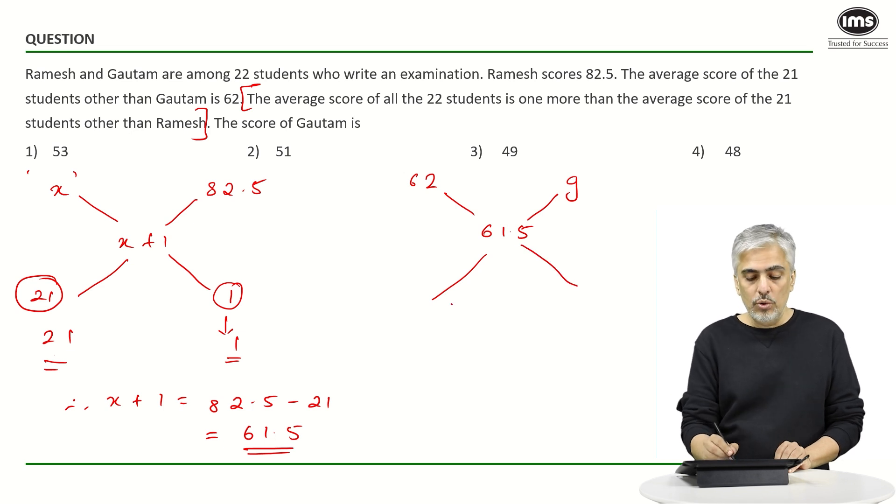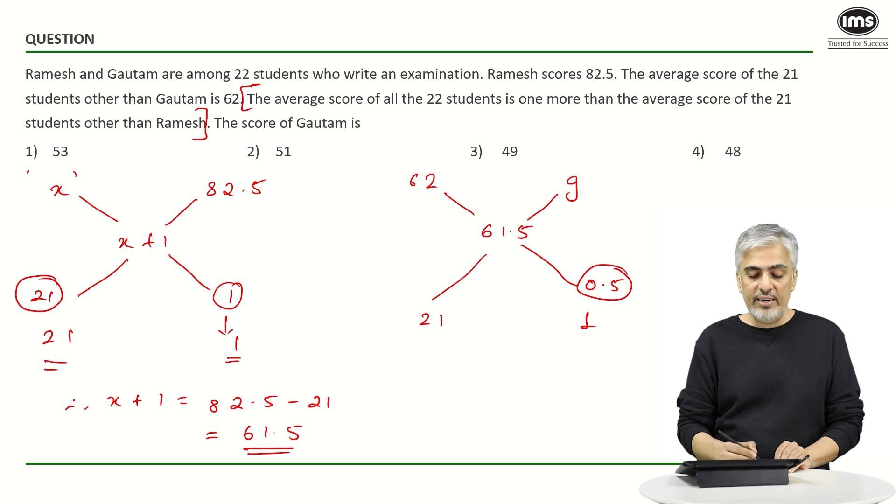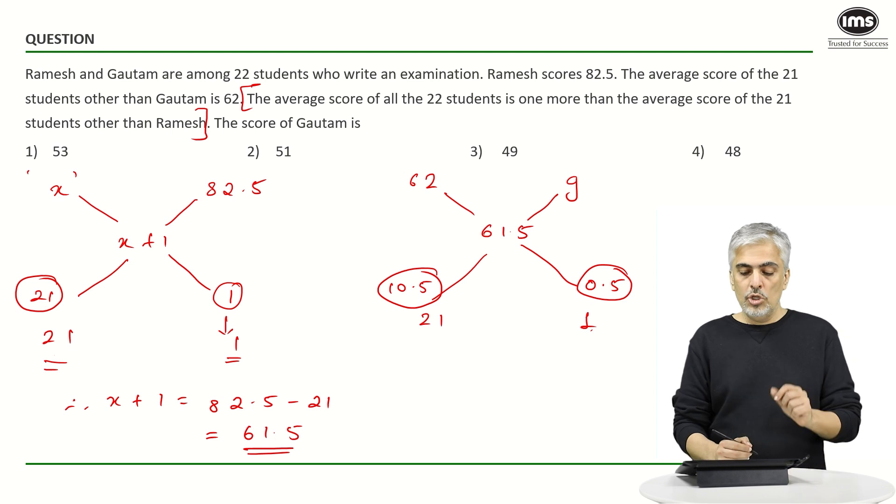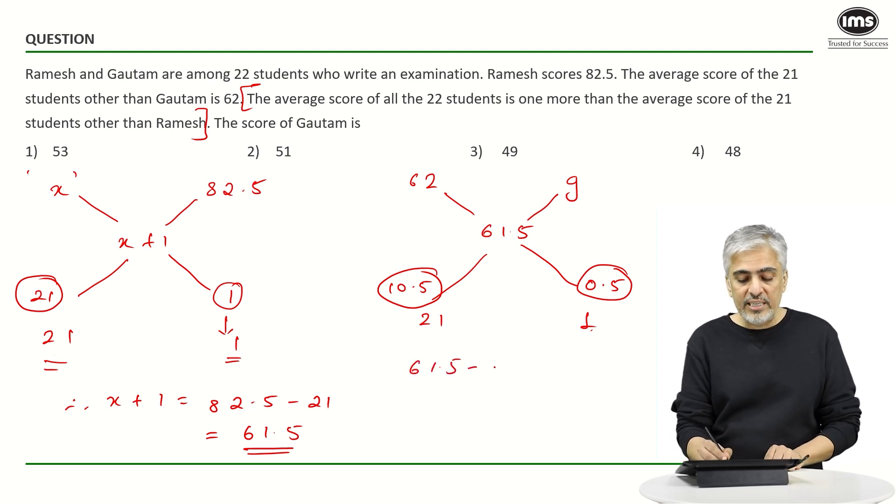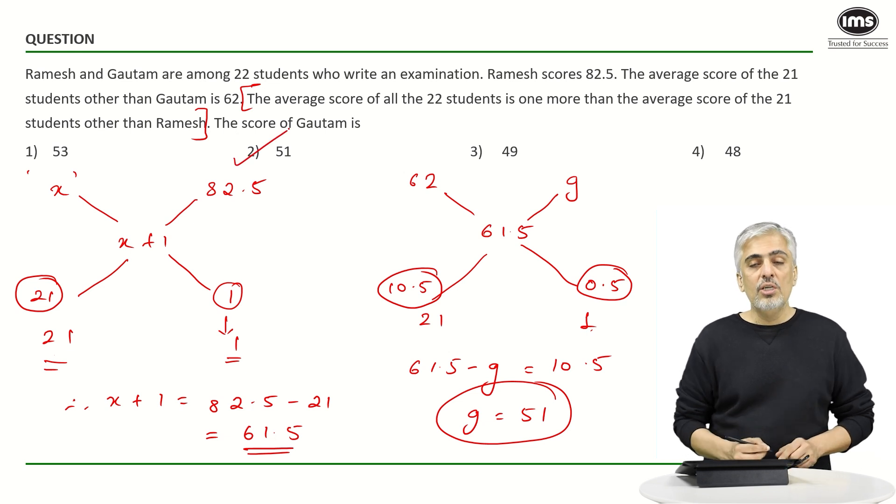Now again I know that these are 21 students and this is one student. What is 62 minus 61.5? 0.5. If 1 corresponds to 0.5, 21 will correspond to 10.5. I hope everybody understands this. Let's have a look once more. If one corresponds to 0.5, then 21 will correspond to 10.5. So 61.5 minus G will be 10.5. 61.5 minus 10.5, G will become 51, and that's my second option.